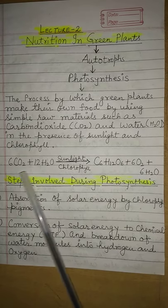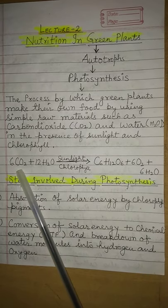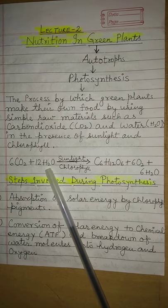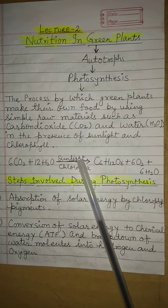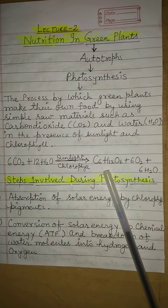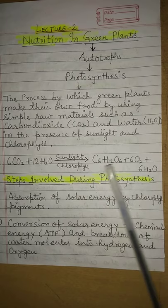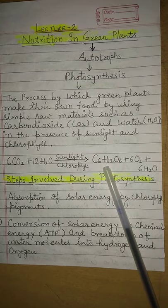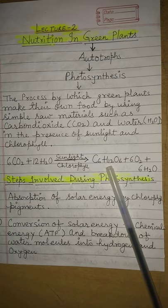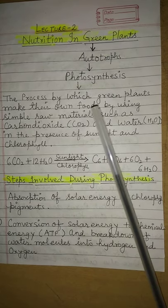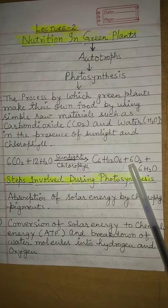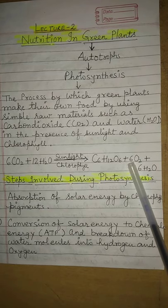Let's see the reaction. Six molecules of carbon dioxide get combined with 12 molecules of water in the presence of sunlight and chlorophyll to produce one molecule of glucose. C6H12O6 is the formula of glucose — it is the food made by plants during the process of photosynthesis. Six molecules of oxygen are also released during photosynthesis.